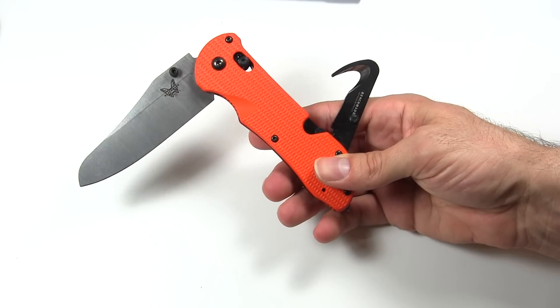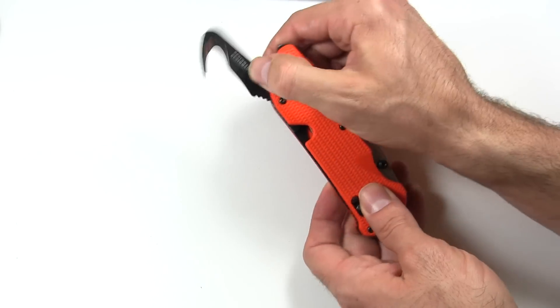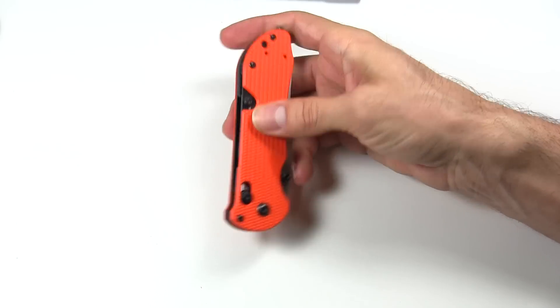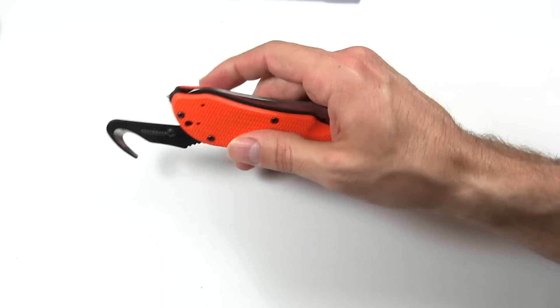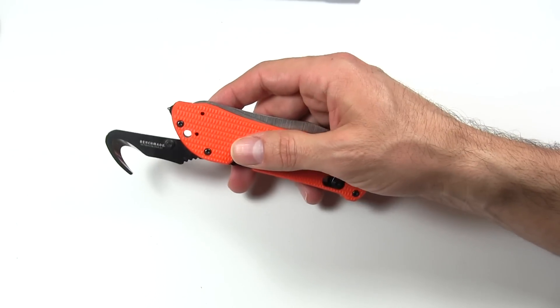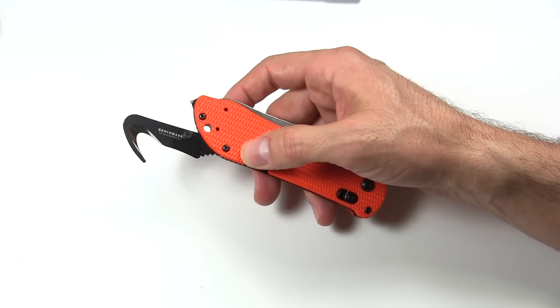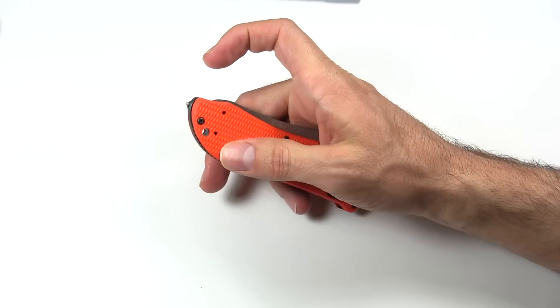It has this modified sheep's foot blade, and I'll get into that in a bit. And then back here, it has this very cool rescue hook that just tucks right in there. It comes right out. Rescue hook for doing things like if you need to cut someone out of their clothes to get to some injured part of them. If you need to cut a seatbelt, you need to cut some rope.